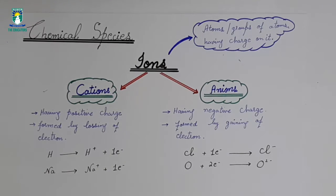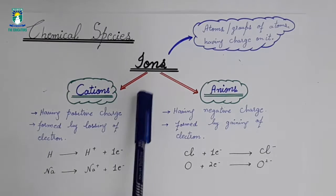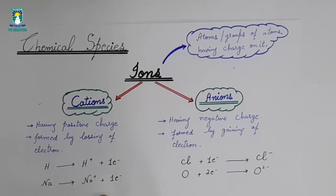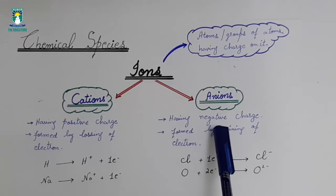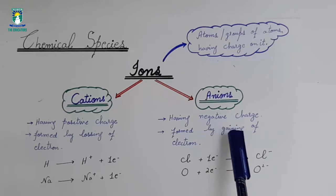There are two types of ions: number one is cation and number two is anion. When an atom acquired positive charge, it is said to be cation. And when an atom acquired negative charge, it is said to be anion.